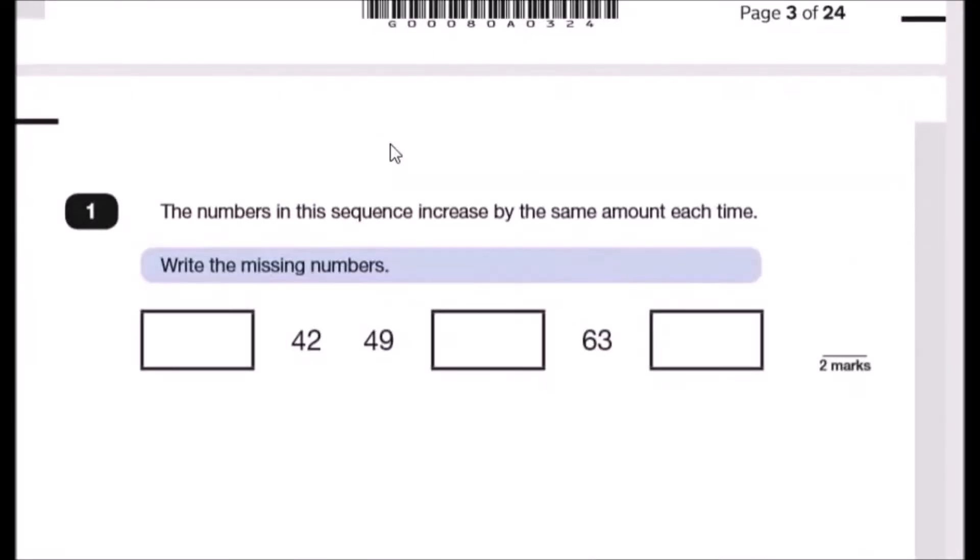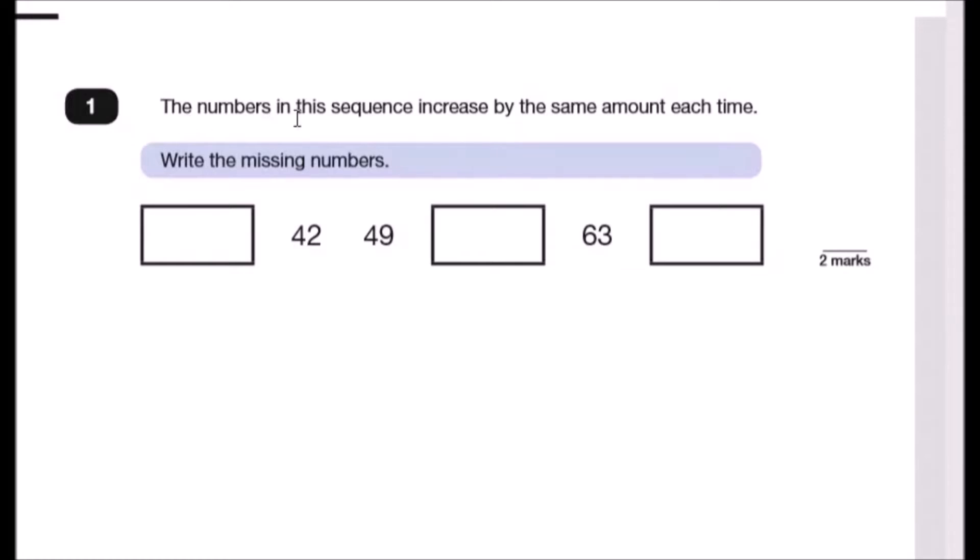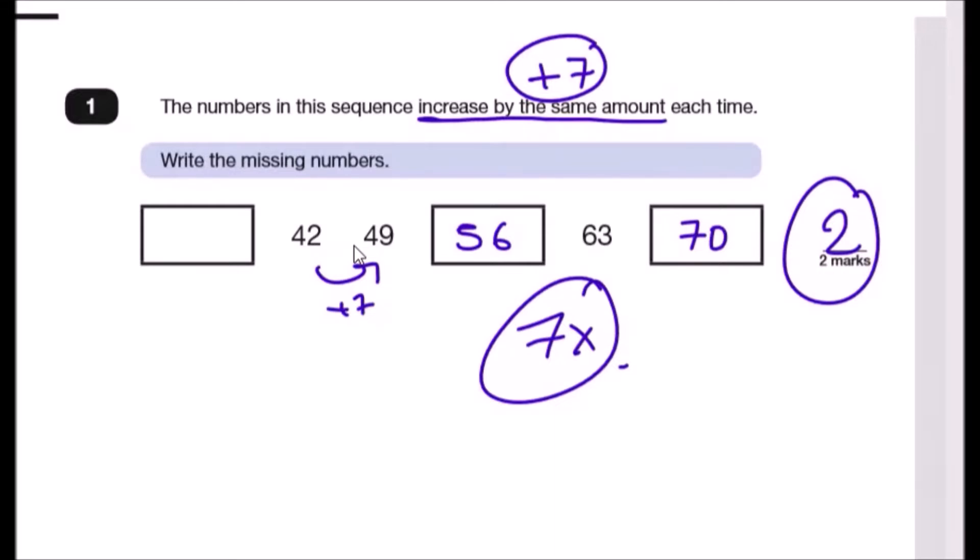The numbers in the sequence increase by the same amount each time. Write down the missing numbers. You've got 42, 49, so this has gone up by plus 7. Because we know it increases by the same amount, we can just add 7. So 49 add 7 gives us 56, and 63 add 7 gives us 70. You'll realize this is literally the 7 times table. For the first box here, you've got to go back 7 as well, so this would be 35.